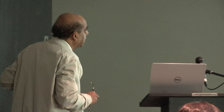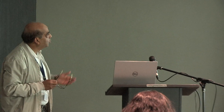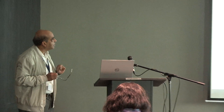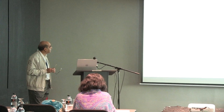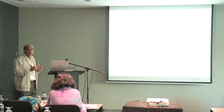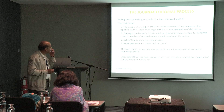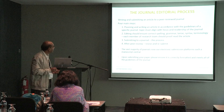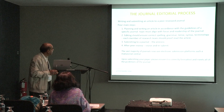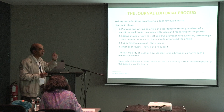I'll give you some background about the general editorial process, and then move to the two papers that we're talking about. Writing and submitting an article to a peer-reviewed journal has four main steps. First of all, you have to write the paper. Planning and writing an article in accordance with the guidelines of a specific journal — the topic must rely on the focus and direction of the journal.